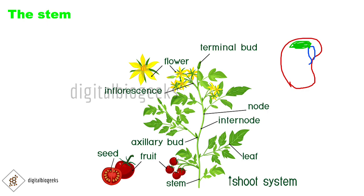The leaves arise from the stem at regions called the nodes. From a node, a leaf arises. The area between two nodes is known as the internode.